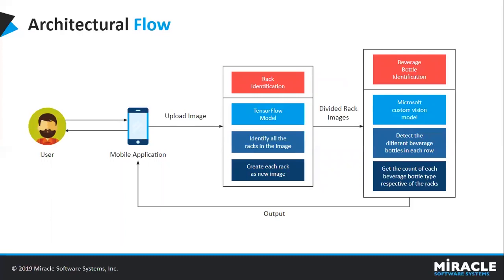Let's discuss the architectural flow. The application we have built is a mobile application with two modules: the camera module and the gallery module. In the camera module, the user goes to a rack, clicks a picture, and gives that picture as input for the models. In the gallery module, the user selects images from the gallery and provides those as input. Once a picture is uploaded, it first hits the rack identification model, which is a TensorFlow model. This model searches the image for racks, and the image is divided into as many sub-images as there are racks detected.